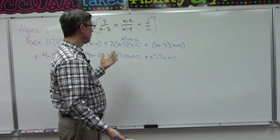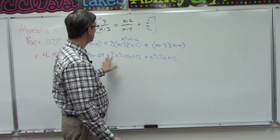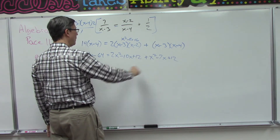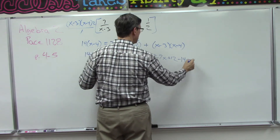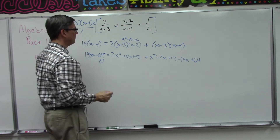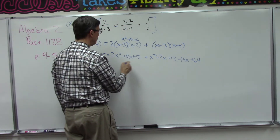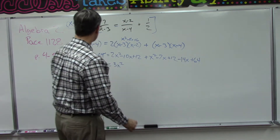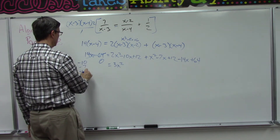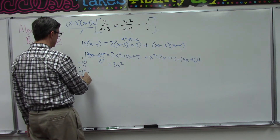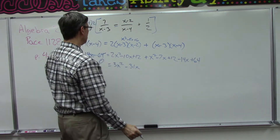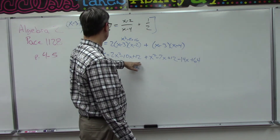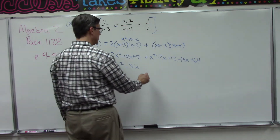Now's a good time to bring everything to the same side and set it equal to zero. It doesn't matter if you bring it to the left or the right. I'm going to bring these two things over here — so minus 14x and plus 64 — and that gives me zero over here. Now we go through and find all the like terms: 3x squared, then negative 10x, negative 7x, negative 7x, negative 14x gives us negative 31x, and then the constants 12 and 64 give us 76.